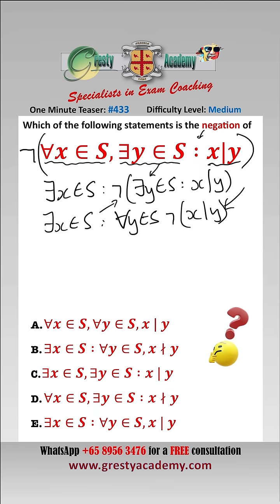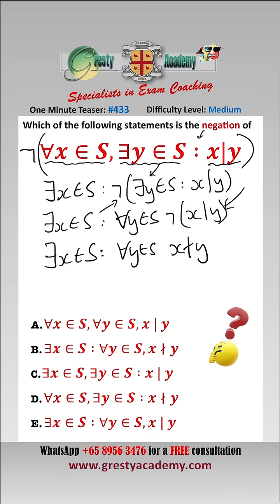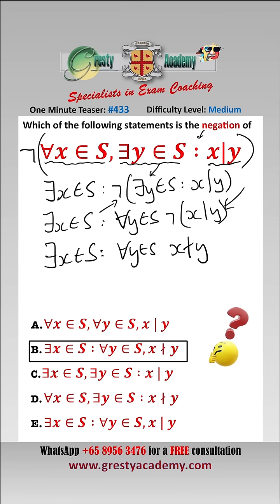Now, 'not x divides y' simply means 'x does not divide y.' So finally we have: there exists an x in S such that for all y in S, x does not divide y. And that is answer b.